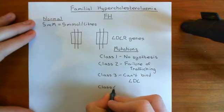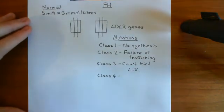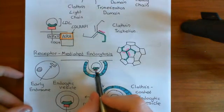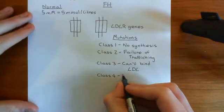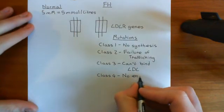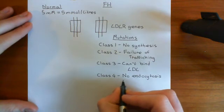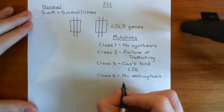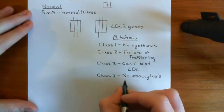In class 4 mutations, the receptor is synthesized, it does traffic to the plasma membrane, it does bind LDL, but then when you come to try and endocytose it — when you try and actually endocytose the LDL receptor with the LDL cargo bound to it — it fails. So no endocytosis is what occurs in class 4 mutations. This is similar to autosomal recessive hypercholesterolemia where you've got mutations in the LDL receptor adapter protein 1, but this time it's a fault on the part of the receptor rather than the adapter protein.